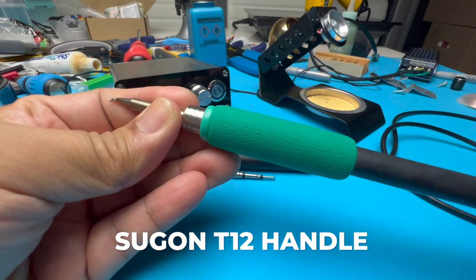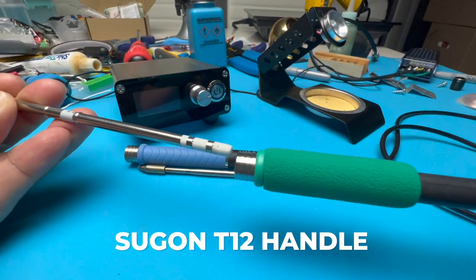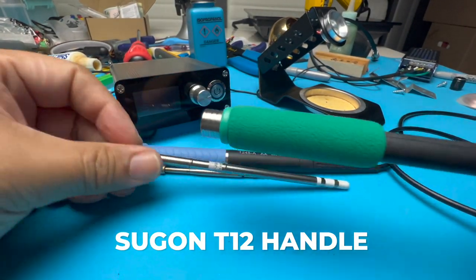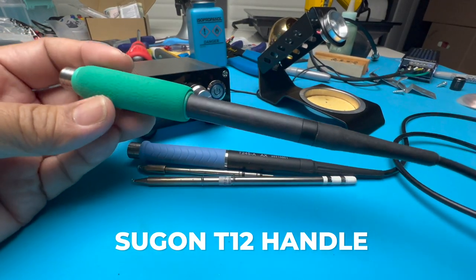For T12 tips, I recommend using the Sugon T12 handle. It has a metal front that will support C-sleep, but you will need to replace the plug.